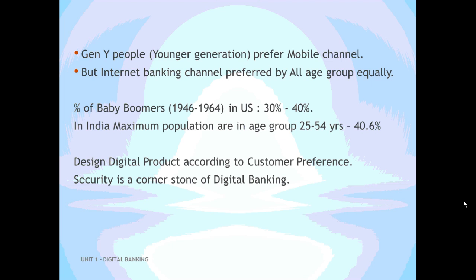Baby boomers are the people who were born between 1946 and 1964. The percentage of baby boomers in the US was about 30 to 40%. In India, the maximum population is in the age group of 25 to 54 years, and they constitute about 40.6% of the entire population.